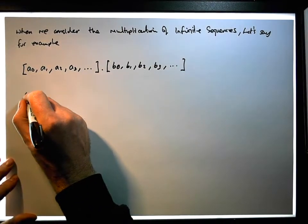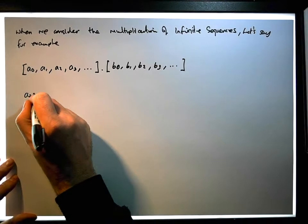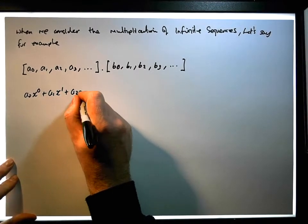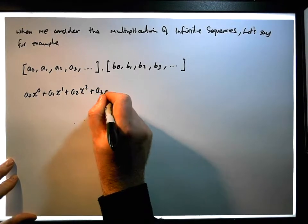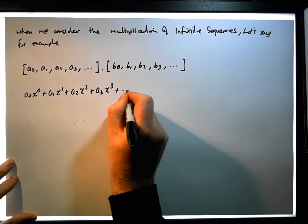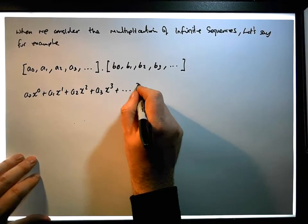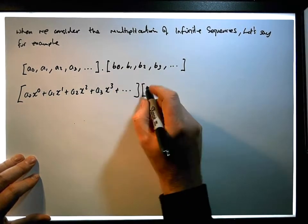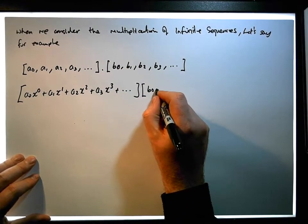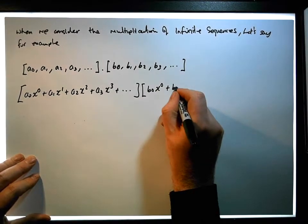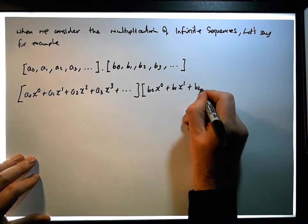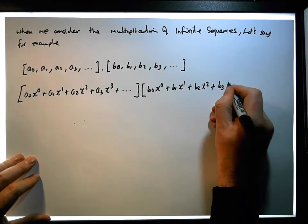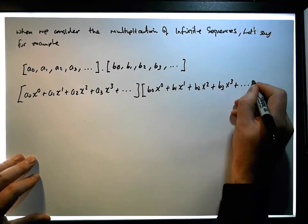Let's actually write it down. This becomes a0·x^0 plus a1·x^1 plus a2·x^2 plus a3·x^3 plus ..., which needs to be multiplied by the generating power series for this particular sequence, which is b0·x^0 plus b1·x^1 plus b2·x^2 plus b3·x^3 plus ...